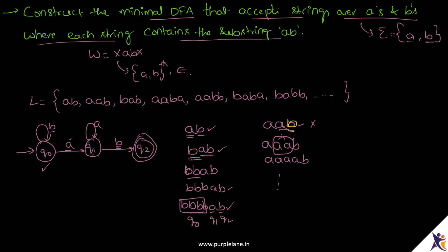So Q1 is also completed. Now coming to Q2: we reached Q2 on seeing the string AB — by seeing A and then B. If I see an A at Q2 we still need to accept this string because AABA is also in our language.